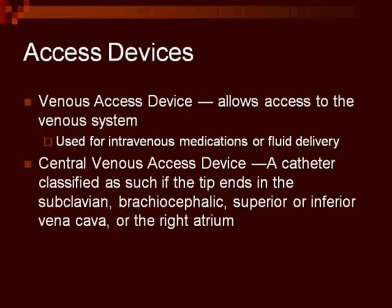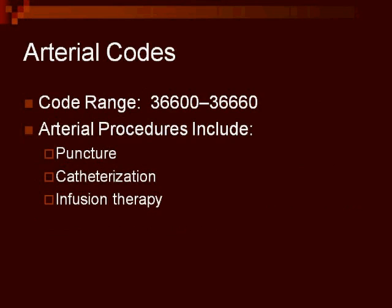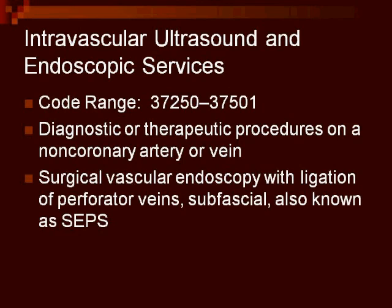Access devices such as venous access devices allow access to the venous system. These are often used for intravenous medications or fluid delivery — an example being the delivery of chemotherapy in cancer patients. Arterial procedures include puncture, catheterization, and infusion therapy. Intravascular ultrasound and endoscopic services can be diagnostic or therapeutic procedures on a non-coronary artery or vein. An example of this is a surgical vascular endoscopy. Therapeutic procedures always include a diagnostic procedure.